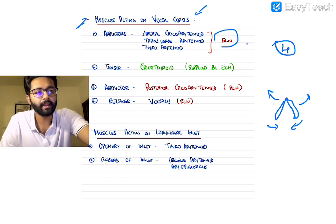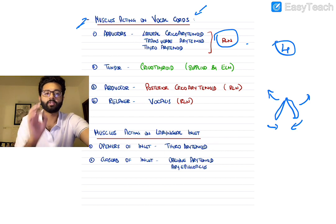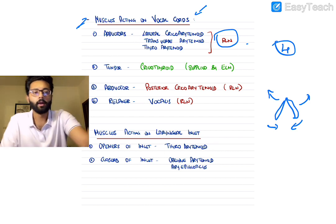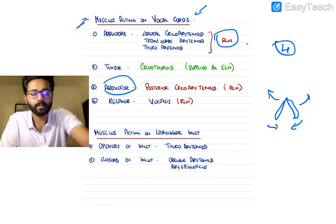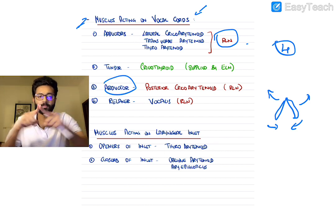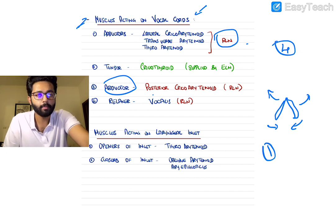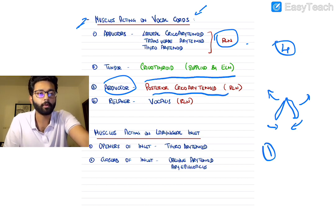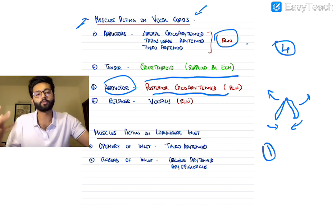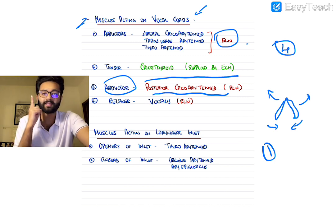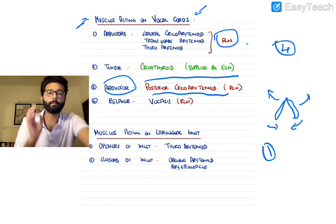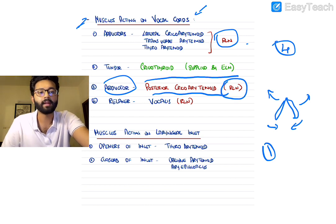The abductor — the muscle which splits the vocal cord — is only one, and this is the most important thing from an entrance exam point of view. There is only a single abductor: the posterior cricoarytenoid, which is also supplied by the recurrent laryngeal nerve.